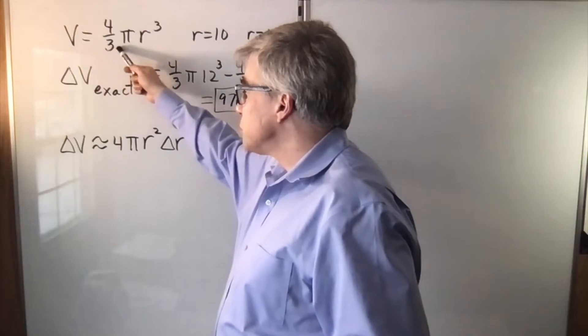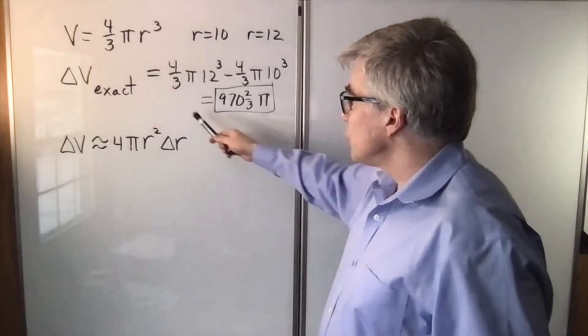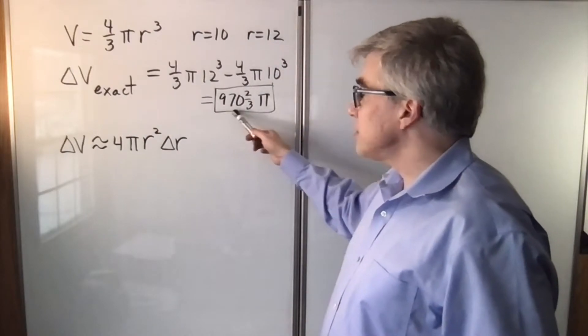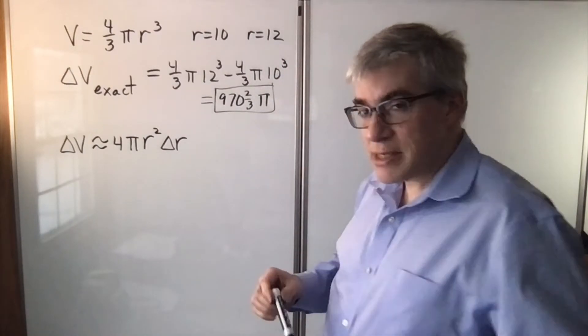Well, the exact volume is 4 thirds pi r cubed. So if we do 4 thirds pi 12 cubed minus 4 thirds pi 10 cubed, we get 970 and 2 thirds pi. That's the exact answer.